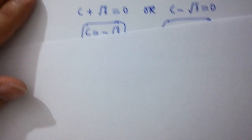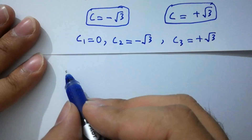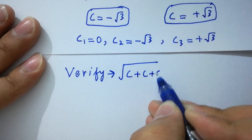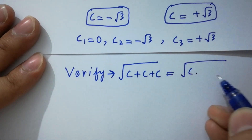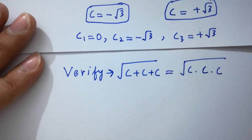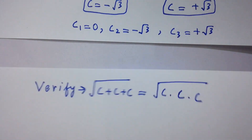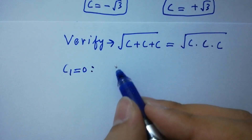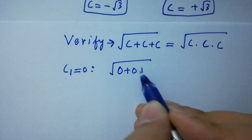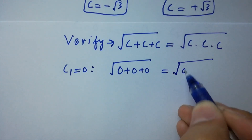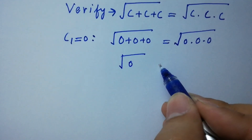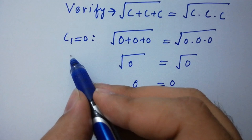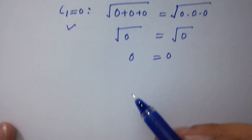In the next step I am going to verify square root of c plus c plus c equal to square root of c times c times c. First, for c1 equal to 0: square root of 0 plus 0 plus 0 equals square root of 0 times 0 times 0, so square root of 0 equals square root of 0, which is 0 equals 0. Left hand side equals right hand side, which shows that the value c1 satisfies the equation.